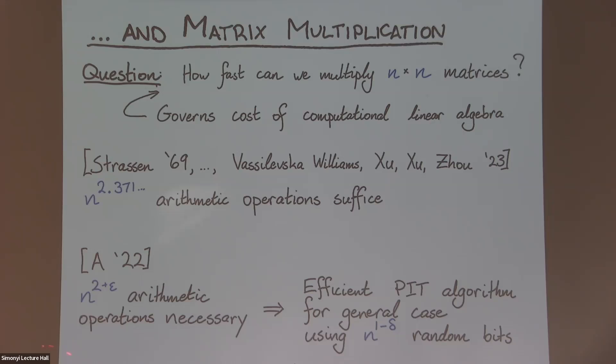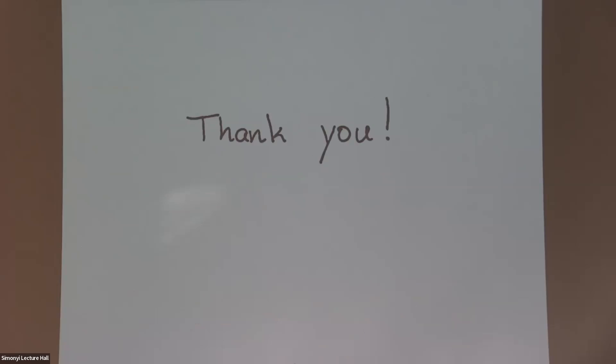So, the last thing I'll tell you is, if you could actually prove some kind of lower bound for matrix multiplication, if you need n to the 2 plus epsilon operations, then you can use this to design an efficient algorithm for the general case of identity testing, that's only going to use something like n to the 1 minus delta randomness. So, just to conclude, randomness, computational lower bounds, these are intimately connected. There's this wonderful problem of polynomial identity testing, and, you know, I hope that, I mean, if you have ideas about it, I'd love to talk about it. So, that's it. Thank you.